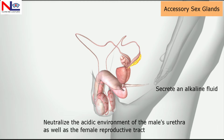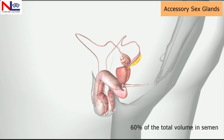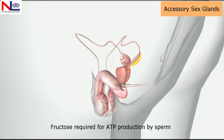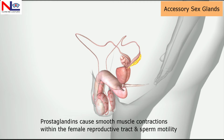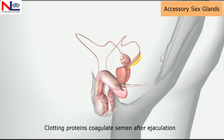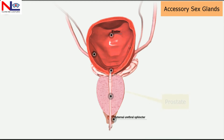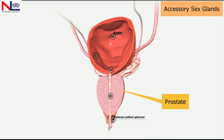The seminal vesicles secrete an alkaline fluid that neutralizes the acidic environment of the male urethra and the female reproductive tract. This fluid forms about 60% of the total volume of semen. Its secretion consists of fructose, which is required for ATP production by sperm; prostaglandins, which cause smooth muscle contraction within the female reproductive tract and aid sperm motility; and clotting proteins that coagulate semen after ejaculation.